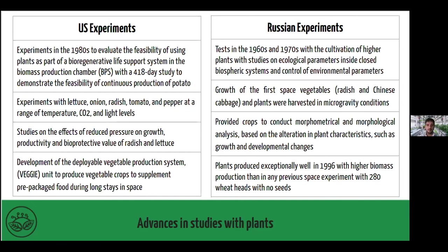From the Russian side, they started with the cultivation of higher plants on ecological parameters inside a closed biospheric system, allowing control of environmental parameters. The first greenhouse allowed control and automation of environmental parameters in the plant chamber. They also grew edible vegetables such as radish and Chinese cabbage, harvested in microgravity conditions. These crops came back to Earth for analysis, and there were studies on morphometric and morphological analysis — alterations in plant characteristics, development, and growth changes. They found that wheat produced ears with no seeds but had good biomass outcomes.